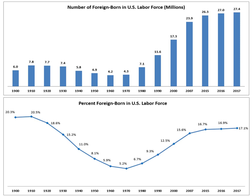The bill set numerical restrictions on visas at 170,000 per year, with a per-country of origin quota. However, immediate relatives of U.S. citizens and 'special immigrants' had no restrictions.